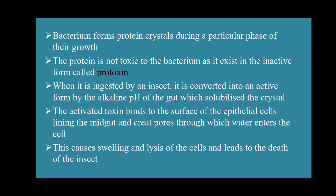That inactive form is called protoxin. When the protein is formed in the bacterium it is in the inactive protoxin form, so it will not harm the bacteria and bacteria can easily survive. But when any insect ingests this protein, it is converted into the active form by the alkaline pH of the gut, which solubilizes the crystal.